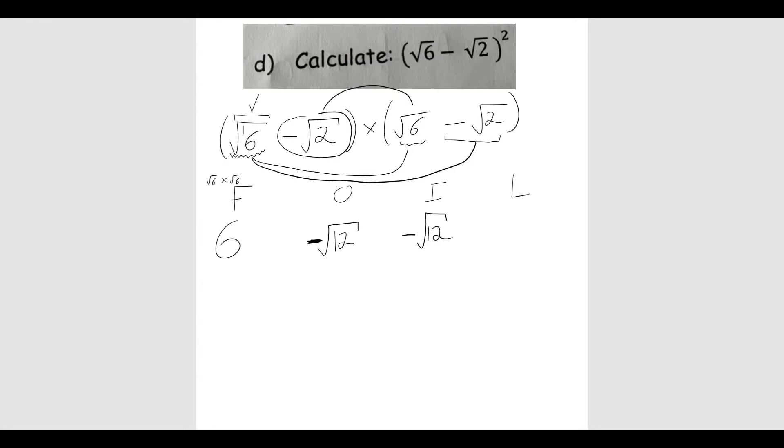Finally, I times minus root 2, so the second term of the first bracket, by the second term of the last bracket. So I have minus root 2 times minus root 2. Now a minus times a minus is a plus, so we end up with plus. Root 2 times root 2 is 2. So I have plus 2.